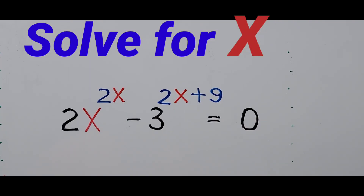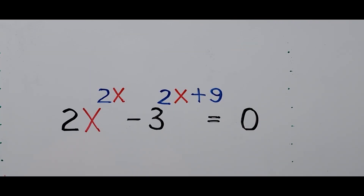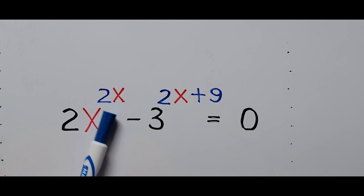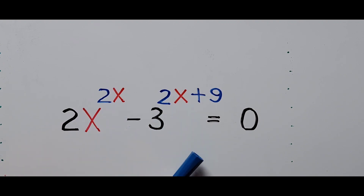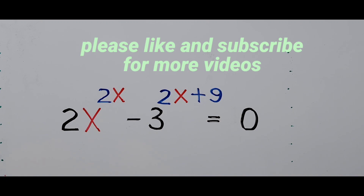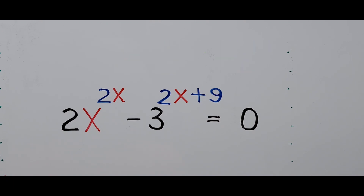Hello everyone, welcome to Cassiano Easy Math. This video is about solving another exponential equation: 2x to the power 2x minus 3 to the power 2x plus 9 equals 0, and we're solving for the value of x. Before we start, for those new to my channel, please like and subscribe for more videos — I would appreciate it.